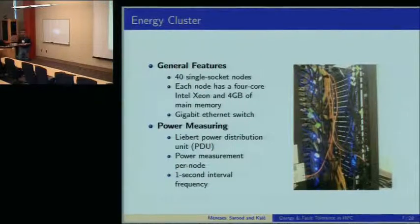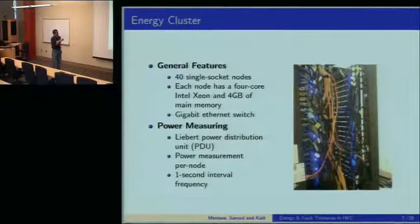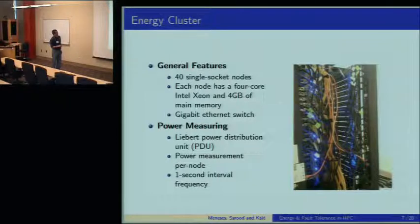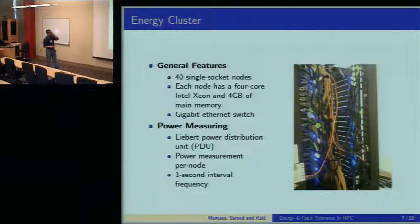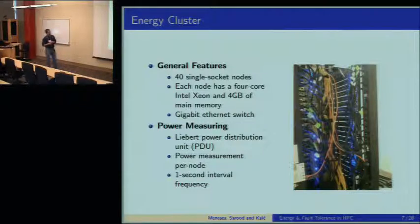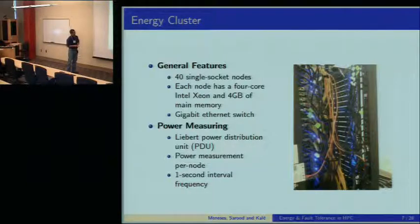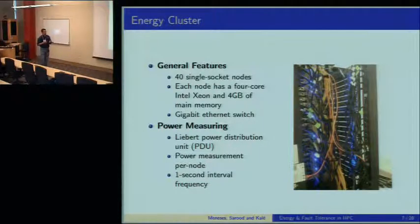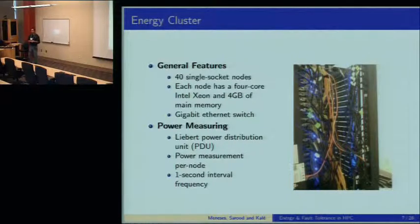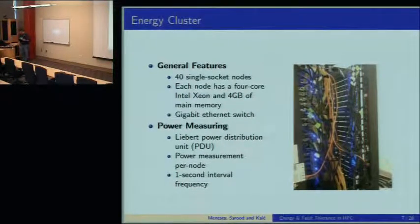We decided to evaluate these three different protocols using the energy cluster. It has 40 single-socket nodes; each node is an Intel Core with four cores and four gigabytes of memory. There is a gigabit Ethernet network linking all the nodes and one single router. There is a PDU that measures every second the power per each node, giving us the power consumed by the whole node including disk, memory, CPU, and caches.